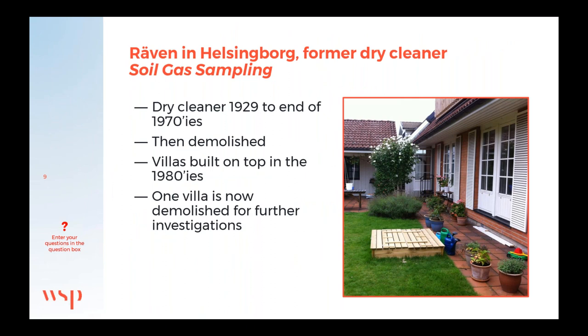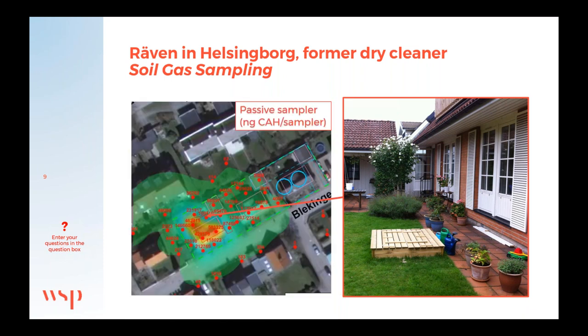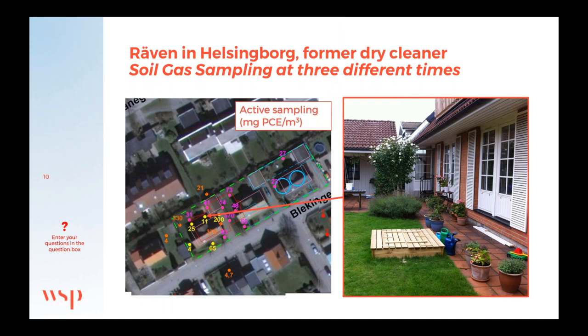Now I will go into a bigger project done by my colleagues at WSP. This is a former dry cleaner in Helsingborg that operated from 1929 to the end of the 1970s. It was demolished and villas were built on top of it in the 1980s — as you can see in the picture. The reason is the orange chlorinated solvents plume that is just under this building. That was investigated by passive sampling and also active sampling by pumping over carbon tubes, done at three different times. You can see some different concentrations varying a little bit, and all these concentrations are actually outside of the building, so under the building there are probably higher concentrations.